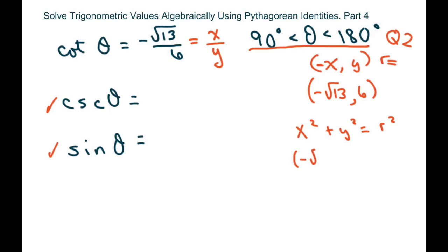So we have negative square root of 13 squared plus 6 squared equals r squared. This is going to be 13 plus 36 equals r squared, which equals 49. Oh, that's nice.